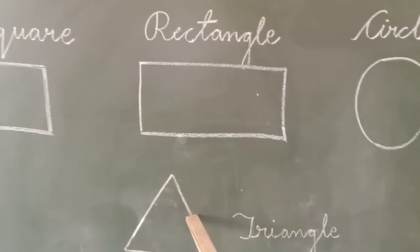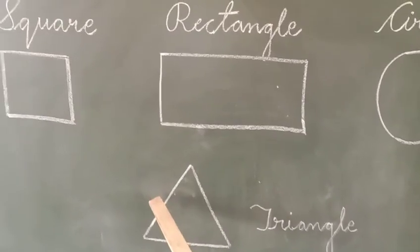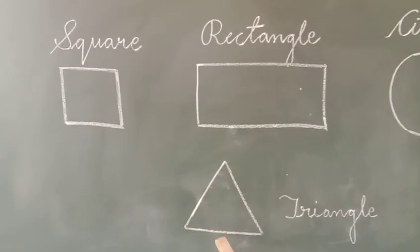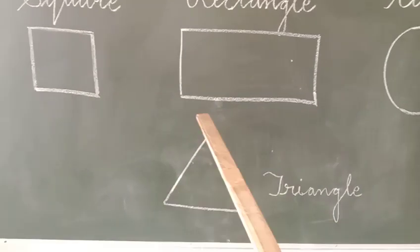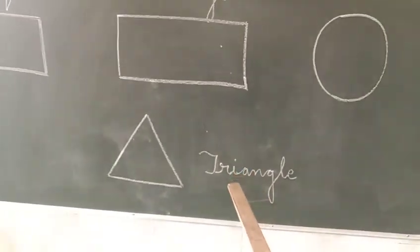Tri means three. One, two, and three - there are total three lines. You can count them: one, two, and three. So this is your triangle. What is the name of that shape? Triangle.